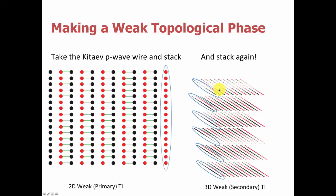Now these are named as follows. On the left half we have a system where we stacked up one-dimensional wires into 2D — since we went up only one dimension, these are called primary weak topological phases. On the right side, we took one-dimensional wires and stacked them up two dimensions higher into 3D. These are called secondary weak topological phases.